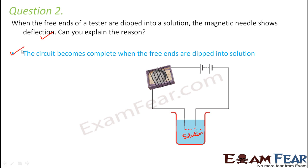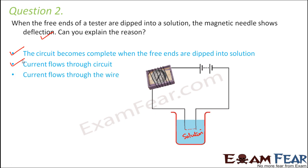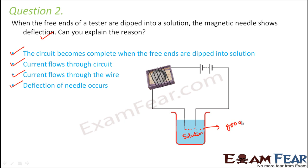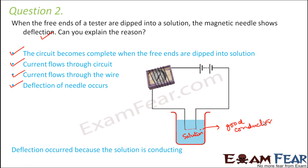The circuit is complete when the tester is dipped into the solution, which means current flows through the circuit. So current flows through the wire and therefore deflection of the needle occurs, showing that the solution is a good conductor.